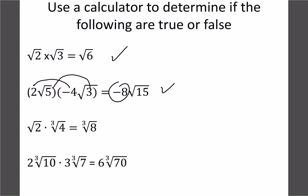This next example: root 2 times cube root of 4 equals cube root of 8 — that's not going to be true, and if you try it on your calculator it doesn't work. The reason is we have to have the same root. If it were cube root of 2 times cube root of 4, that would equal cube root of 8. But because one is a square root, we can't multiply them, so you just leave it separate. Our last example has both as cube roots, so 2 times 3 is 6 and 10 times 7 is 70 — that one is true.